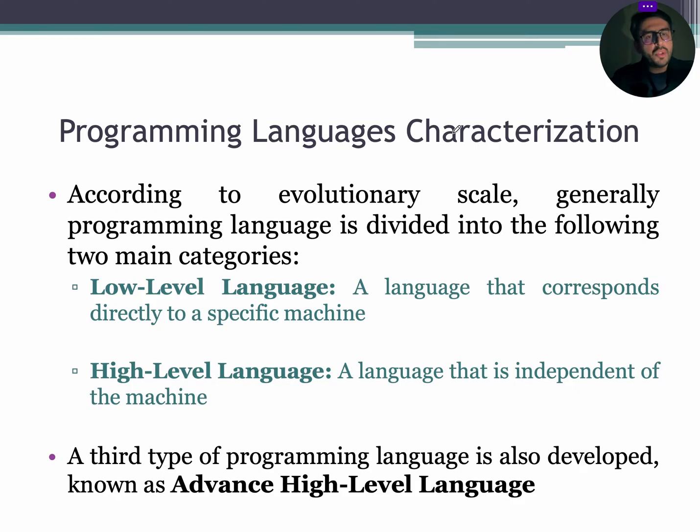Category number two, high level language, a language that is independent of the machine. But there is also a third category of programming language known as advanced high level language.